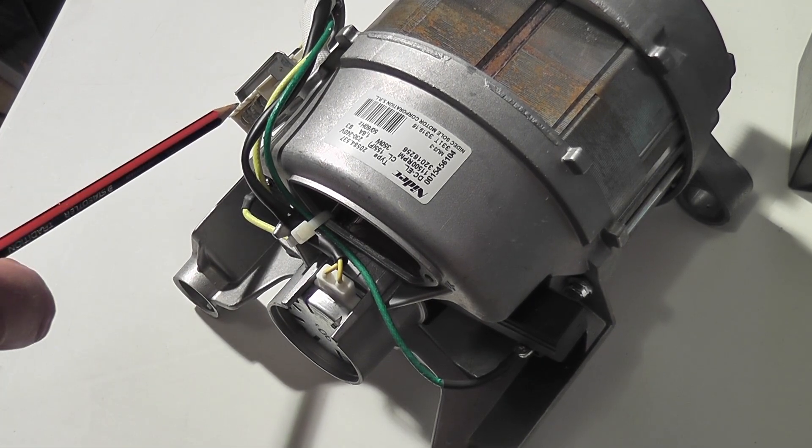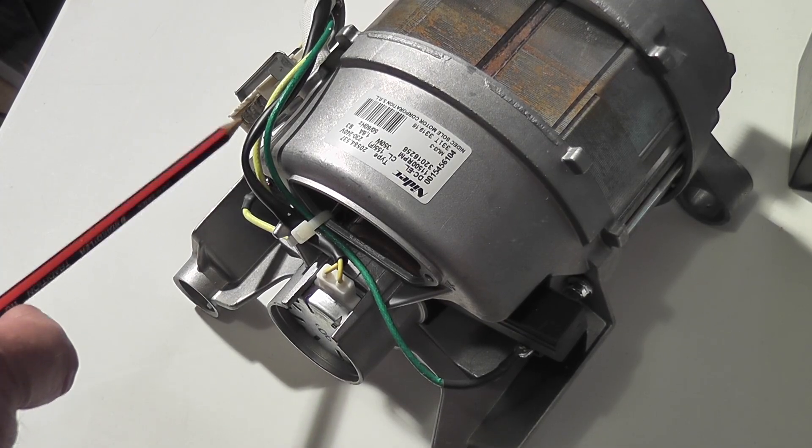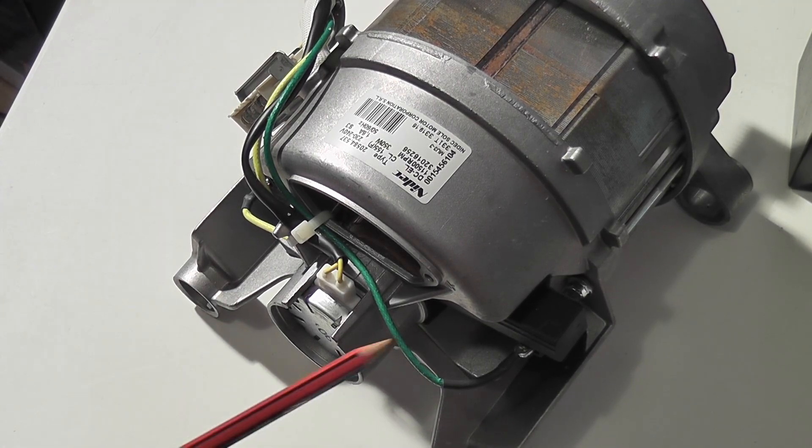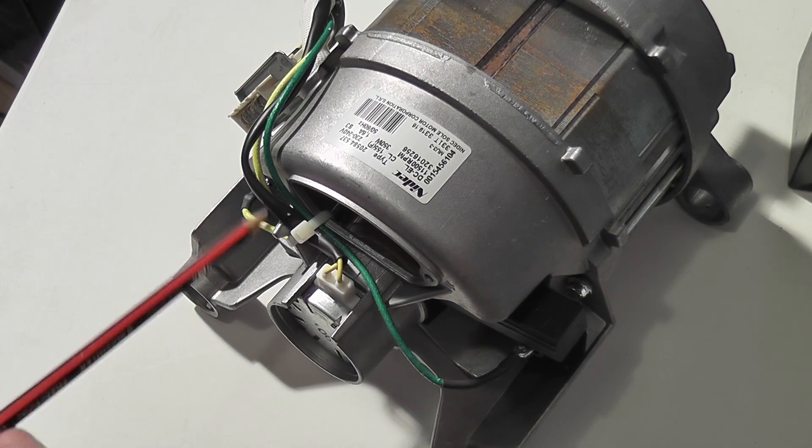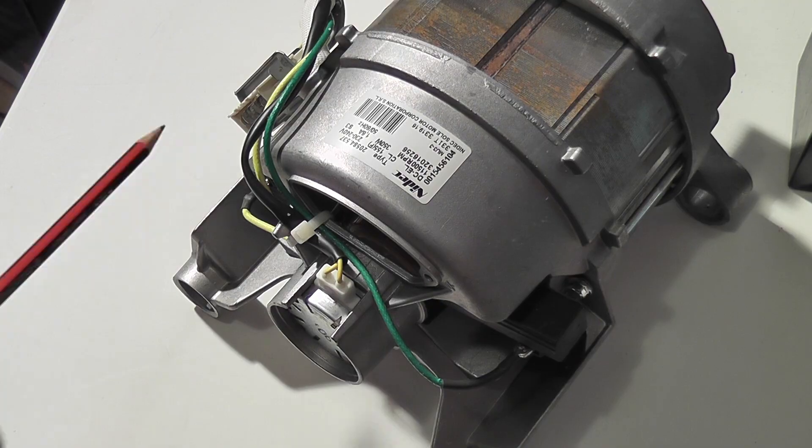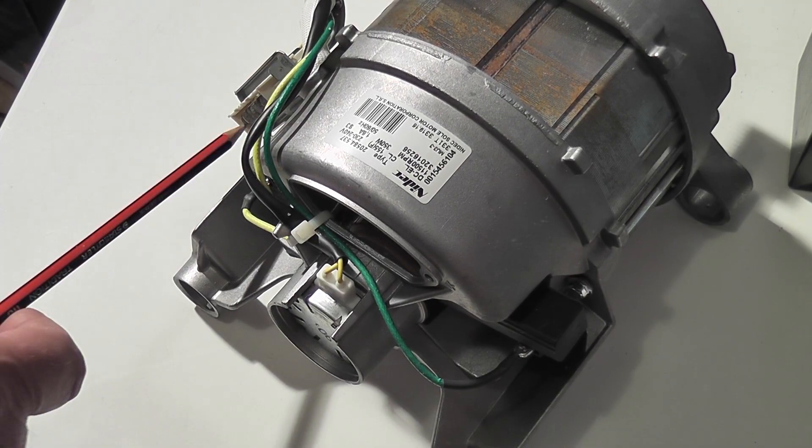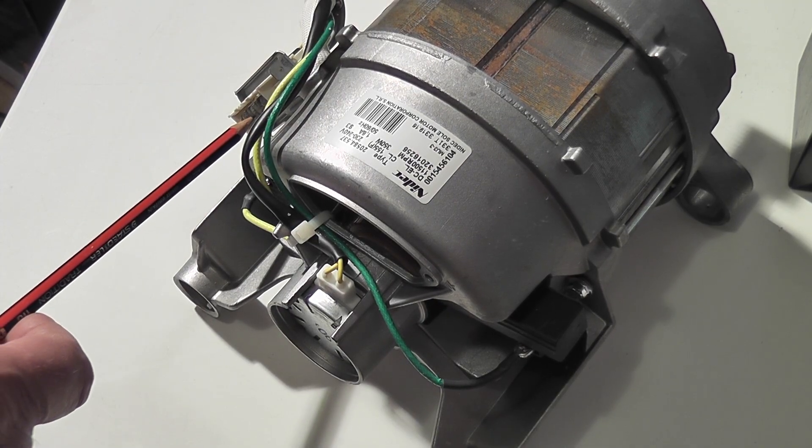So what you do then is you follow them around and you find out what number pin they're going into. In the case of the yellow one, following that around it comes into number three from the bottom, and the green one, follow that around, it comes into number four from the bottom.